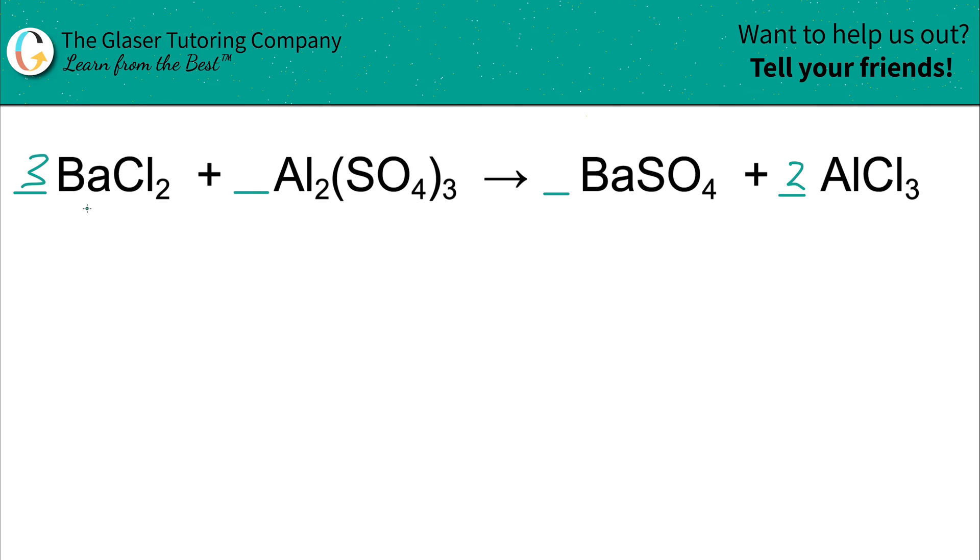Now the thing is, though, it screwed up your barium. But that's not a huge deal because I knew barium existed in this one compound on the left, this one compound on the right. It was a one-to-one ratio, so therefore whatever the coefficient is of the barium chloride has to also be that same coefficient for the barium sulfate. So now I'm going to place a three here.